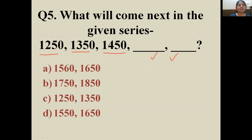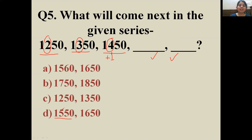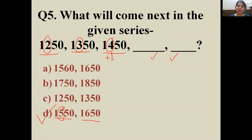If you observe the series, the hundreds place digit is increasing by one — so 100 is being added each time. Adding one at the hundreds place: 4 + 1 = 5, giving 1550; then 1550 + 100 = 1650. The correct answer is D. I've already uploaded a video on number series — check it out if you have any confusion. Now let's move on to question number six.